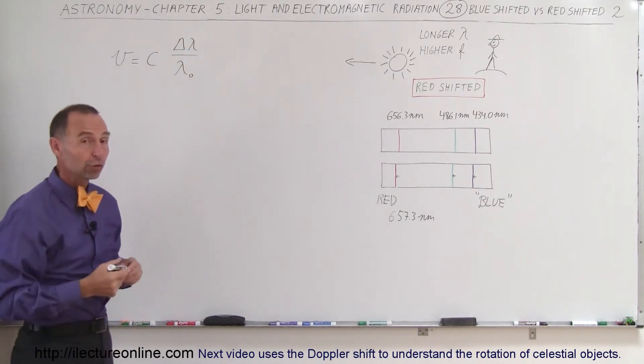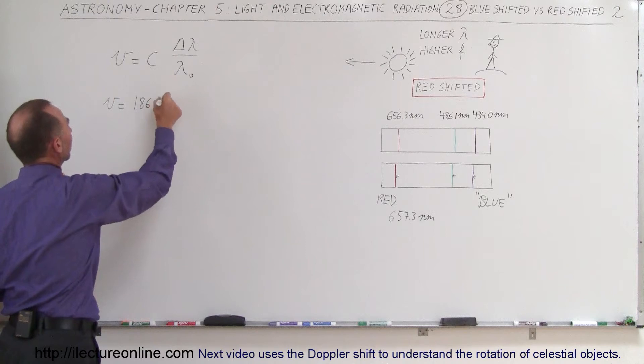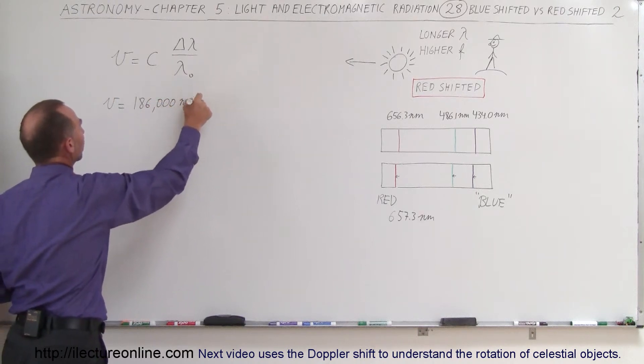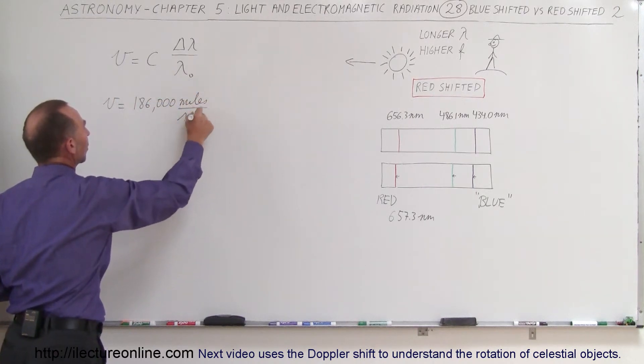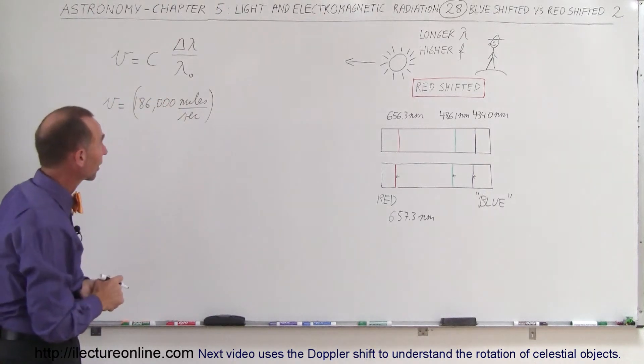The speed of light, if we use miles per second, is 186,000 miles per second. We can, of course, do the very same equation using kilometers per second—that would be 300,000 kilometers per second.